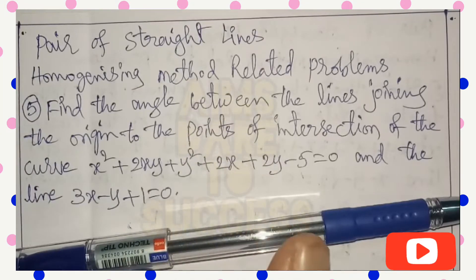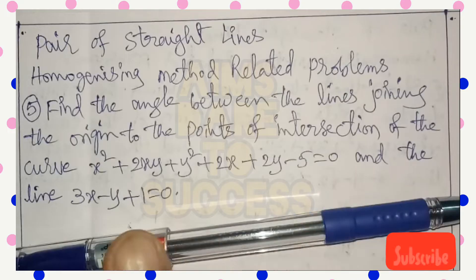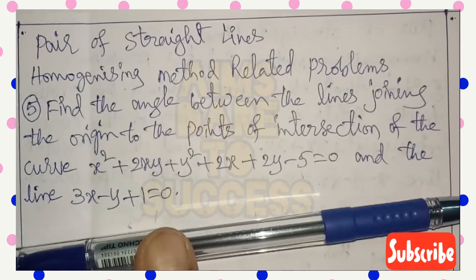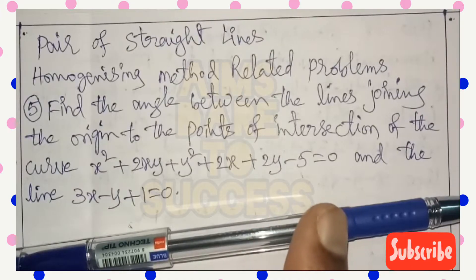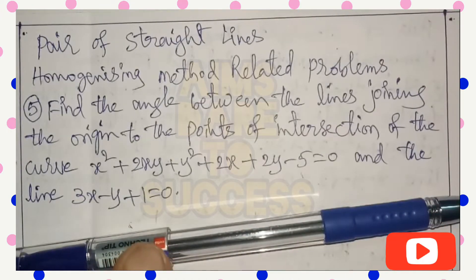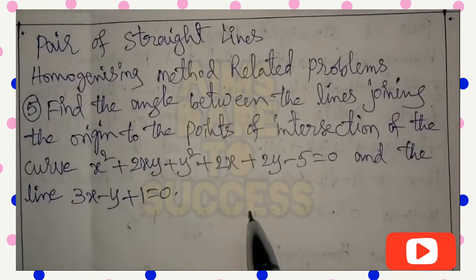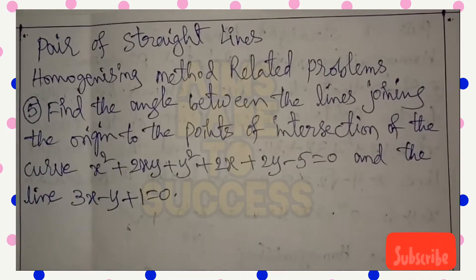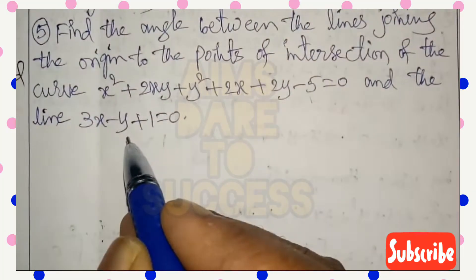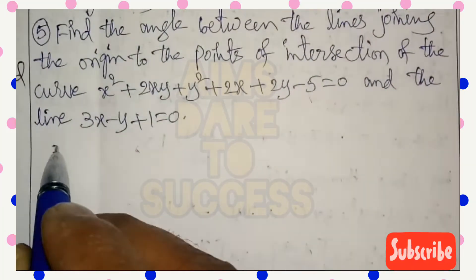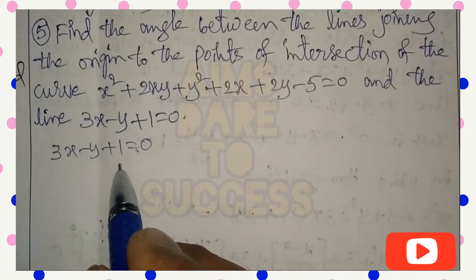Hi, hello, namaste my dear students, welcome to AIM's Dare to Success YouTube channel. Today we are discussing about pair of straight lines, homogenizing method. Question 5: Find the angle between the lines joining the origin to the points of intersection of the curve x² + 2xy + y² + 2x + 2y - 5 = 0 and the line 3x - y + 1 = 0.